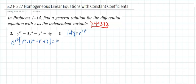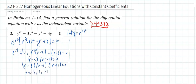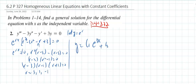Since e to the rt does not equal zero, we factor r³ minus 3r² minus r plus 3. Grouping gives r squared times (r minus 3) minus (r minus 3) equals zero, so (r minus 3)(r² minus 1) equals zero, and then (r minus 3)(r minus 1)(r plus 1) equals zero. So r equals 3, 1, and negative 1, giving y equals c₁e^(3t) plus c₂e^t plus c₃e^(negative t).